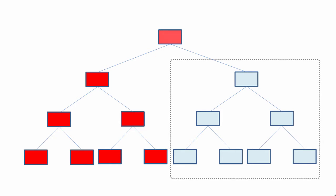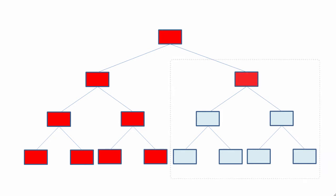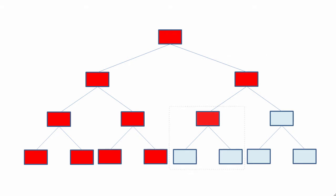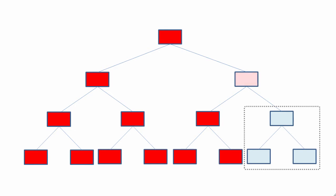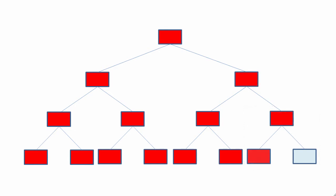Then the left subtree, starting with the root, then the left, then the right. And then finally, the right subtree of this root — starting with the root, then the left, then the right.